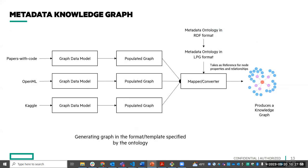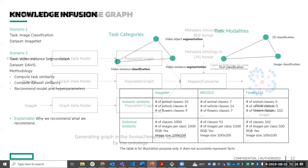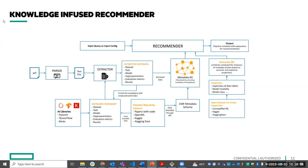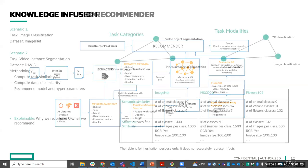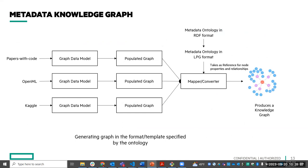Parts of the recommender are already implemented. The semantic KG computes similarities for various metadata entities — we've completed task similarity and are moving towards dataset, model, and evaluation metric similarity. For the metadata KG, we have completed the pipeline for one source — Papers with Code — converting it to the graph data model and populating the knowledge graph based on our proposed metadata ontology.